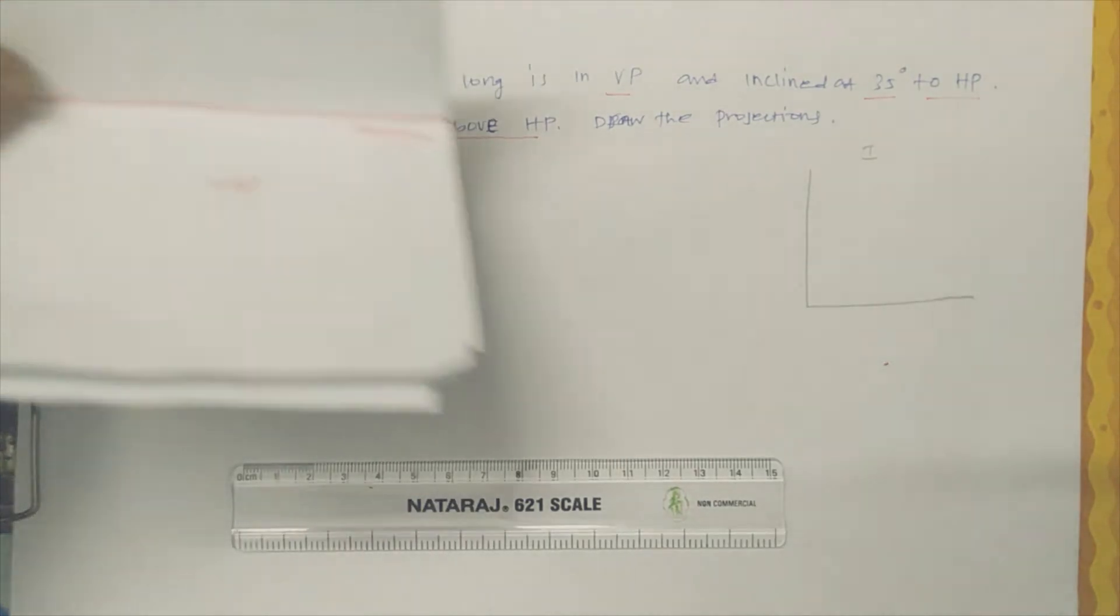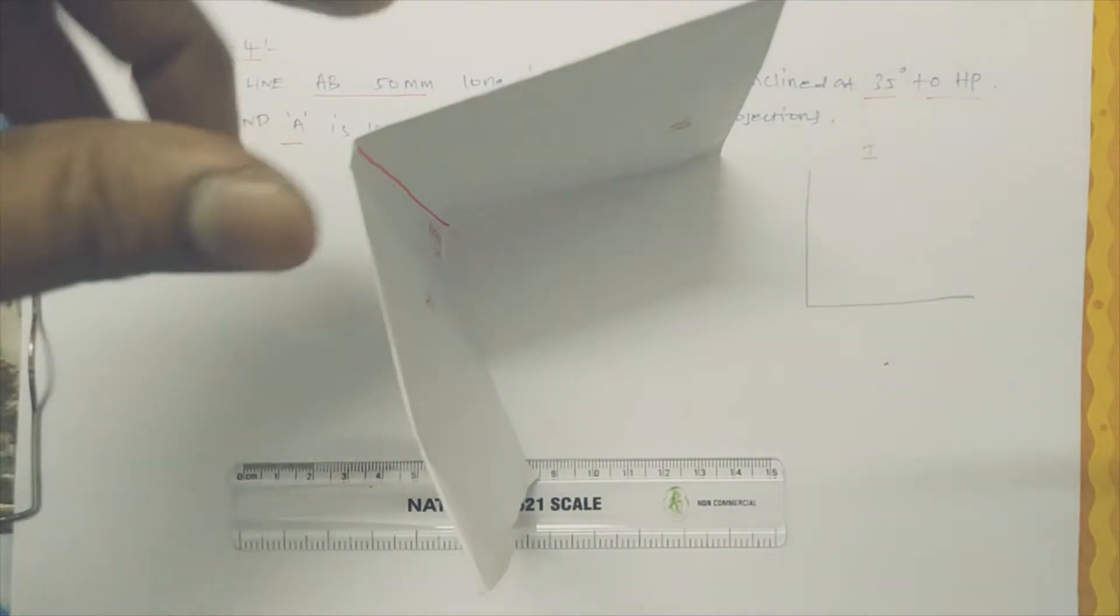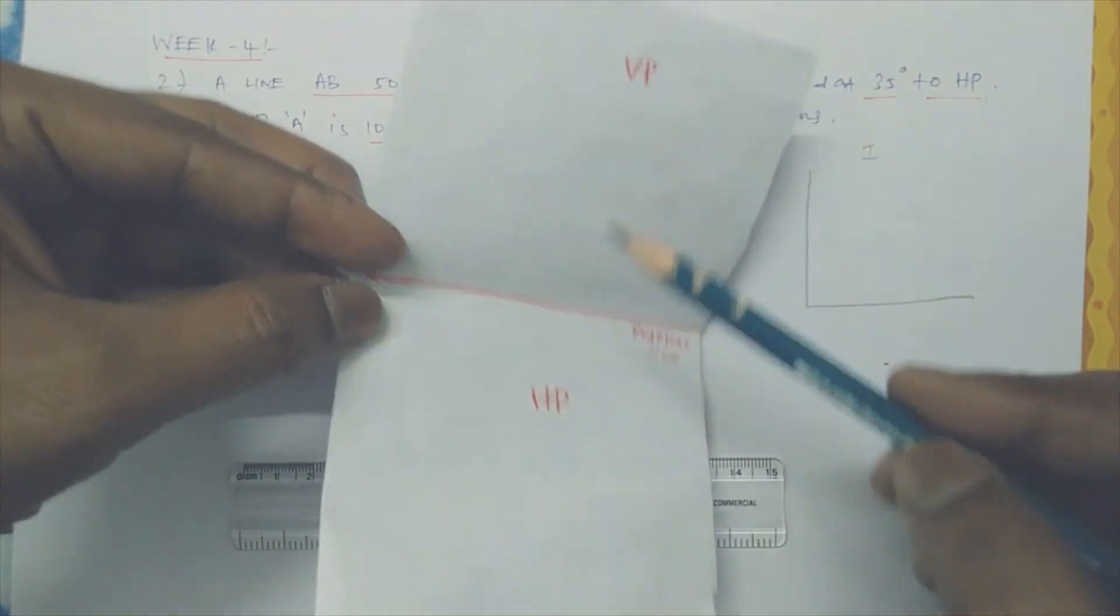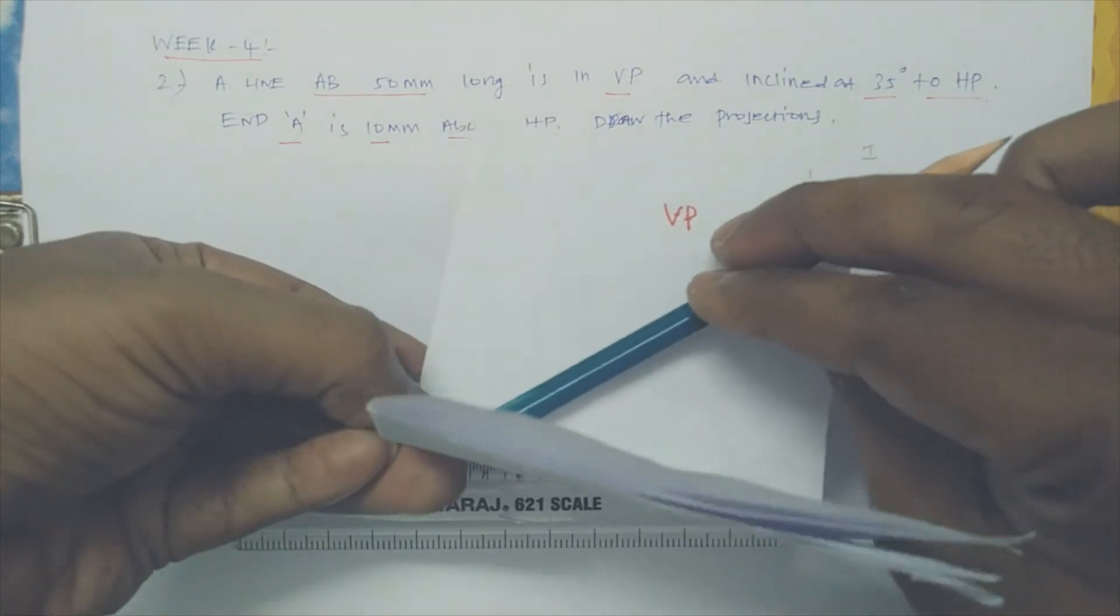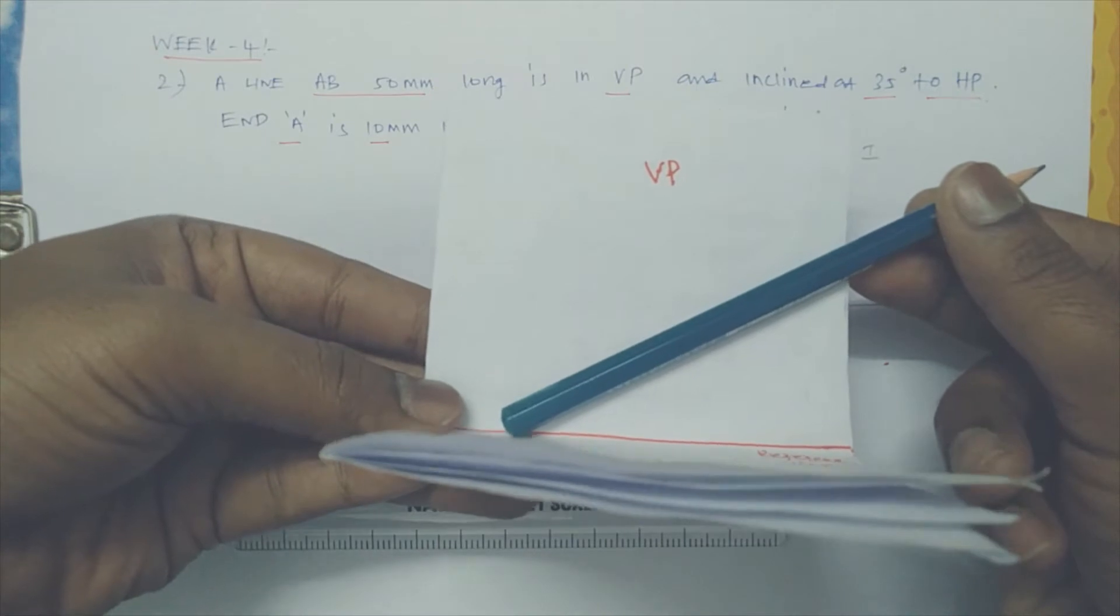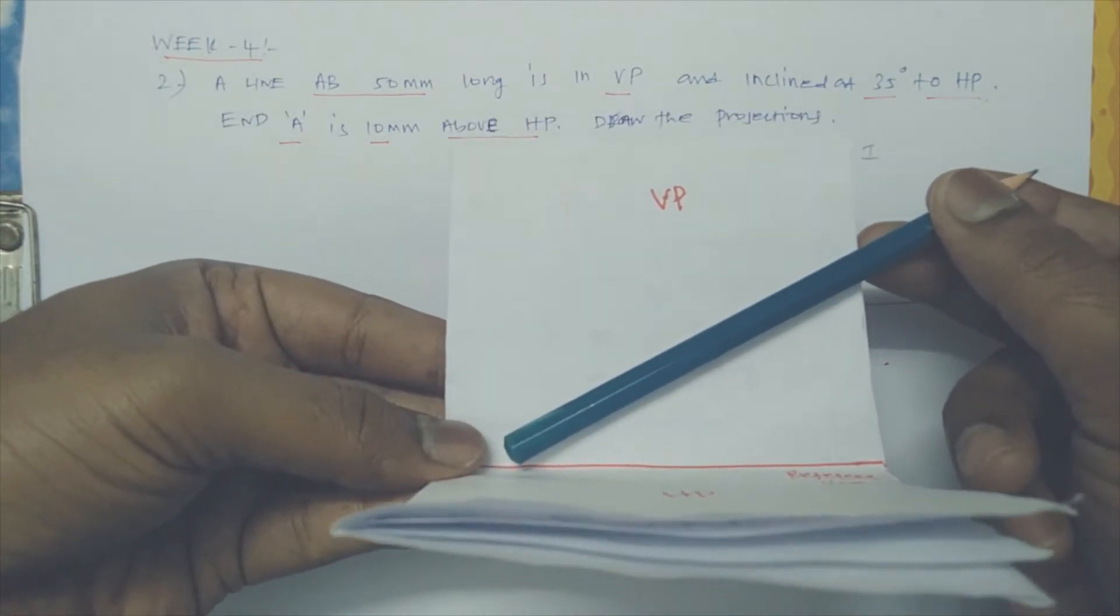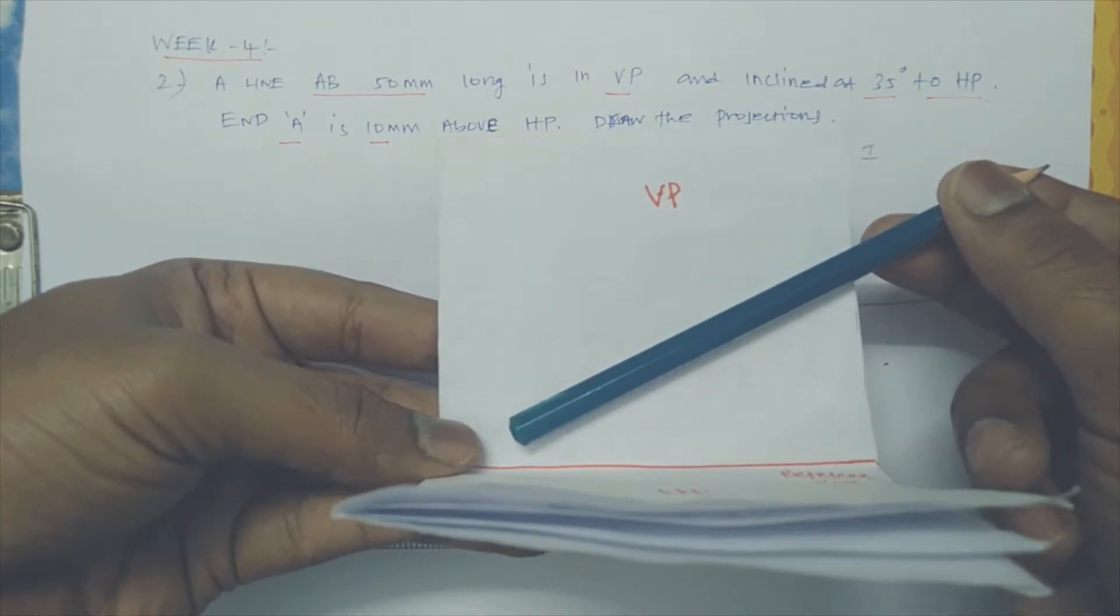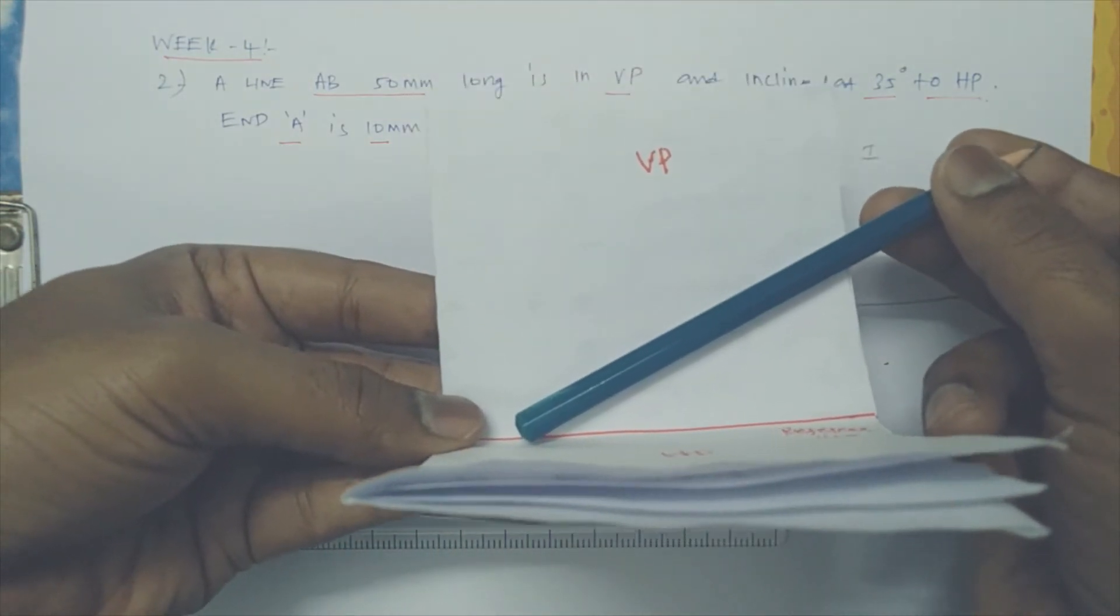Before going to the problem, I'd like to specify the quadrant position. For example, this is VP and HP. Let us consider this pencil as a line. The line is 50mm long. In VP, it is directly kept in VP and inclined 35 degrees. Since it is a reference line, it is inclined 35 degrees to HP.